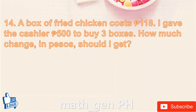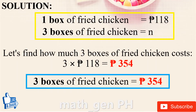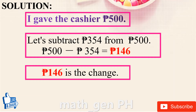Question number 14: a box of fried chicken costs 118 pesos. I gave the cashier 500 pesos to buy three boxes. How much change should I get? Solution: three boxes cost 3 times 118 equals 354 pesos. Change equals 500 minus 354 equals 146 pesos. Answer: 146 pesos.